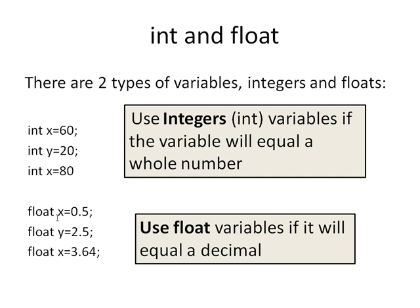If you wanted your variable to equal a number that is a fraction, a decimal here, you would have the variable type float. You would declare it as a variable type float. So there are two types of variables. Integers or floats.